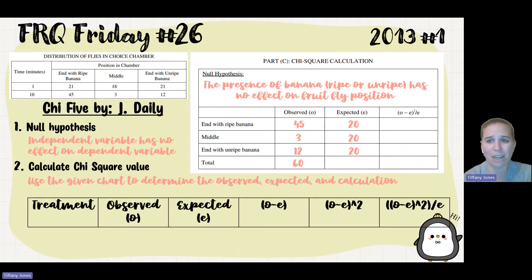And then I just fill it in the map. So I put my observed, my expected, I square it, and then I put it over my expected, and that would give me my chi-square value.